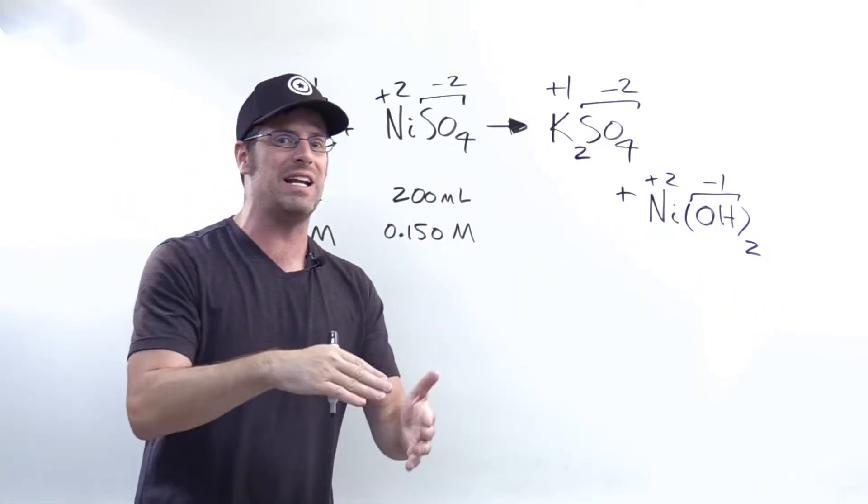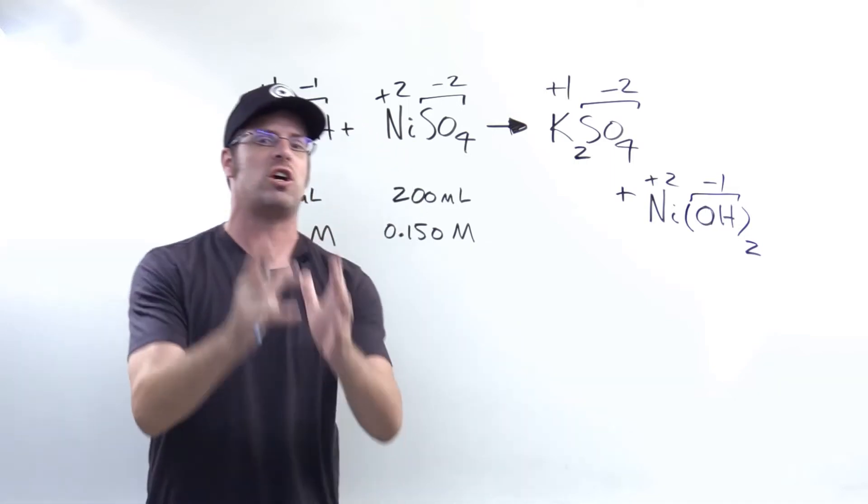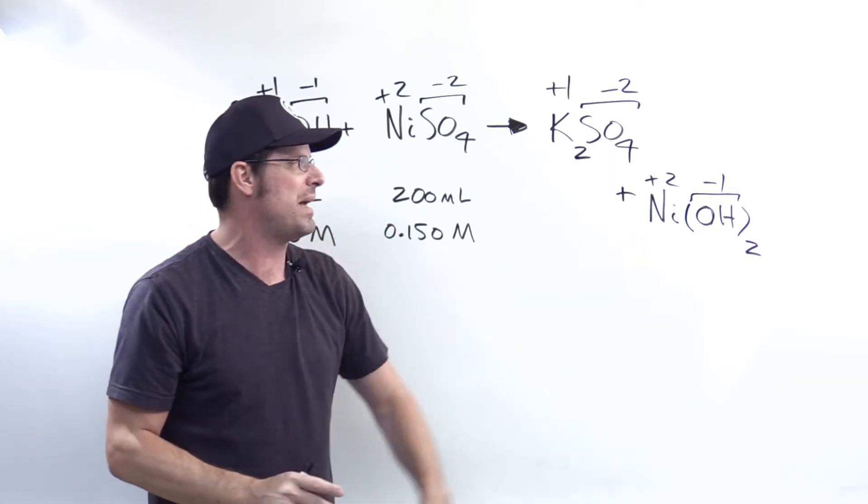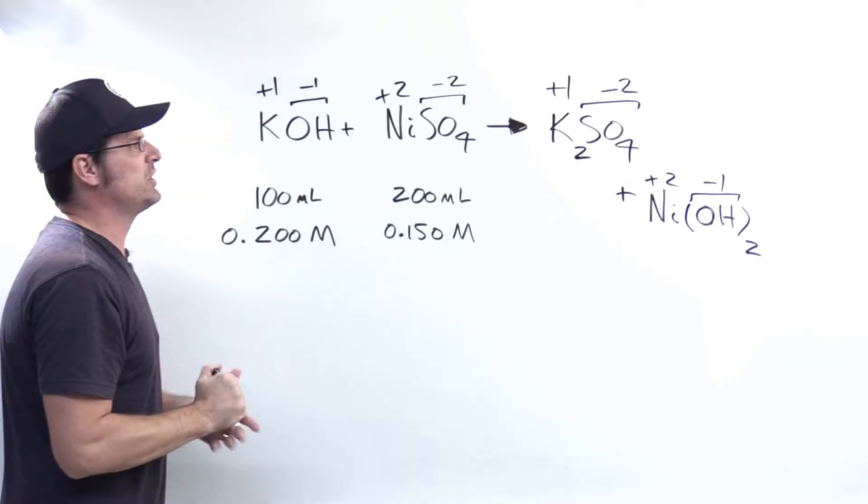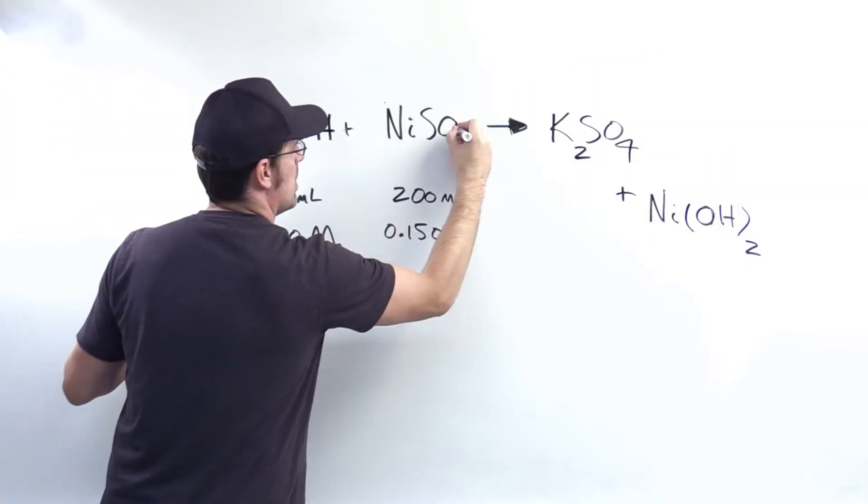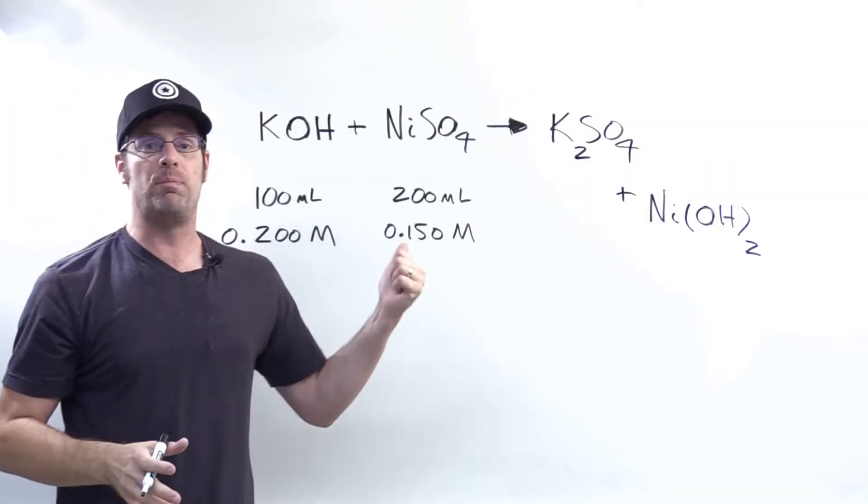Now I have two hydroxides, minus one each, in toto is going to give me a charge of negative two, which will cancel or balance out that positive two in the nickel in my formula. Now I'll go ahead and erase my charges, which again, I really only put there for bookkeeping purposes.